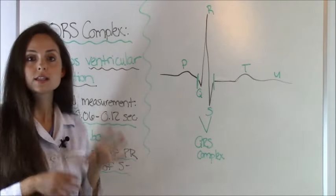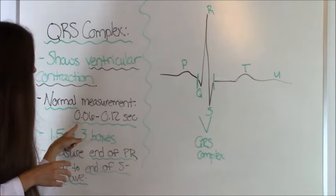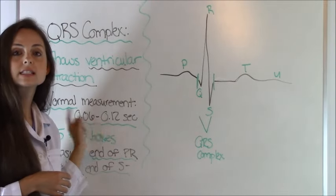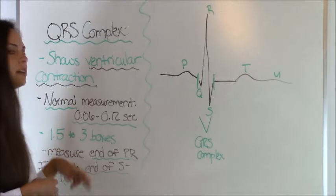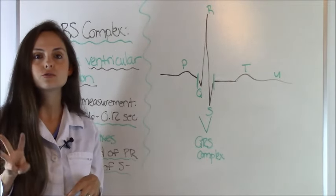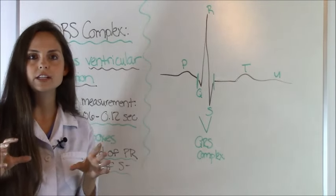A normal QRS complex measures between 0.06 to 0.12 seconds. This will calculate out to be one and a half to three small boxes on your EKG strip.